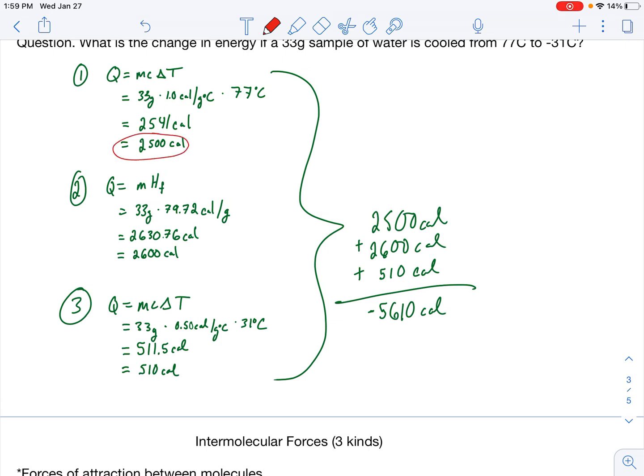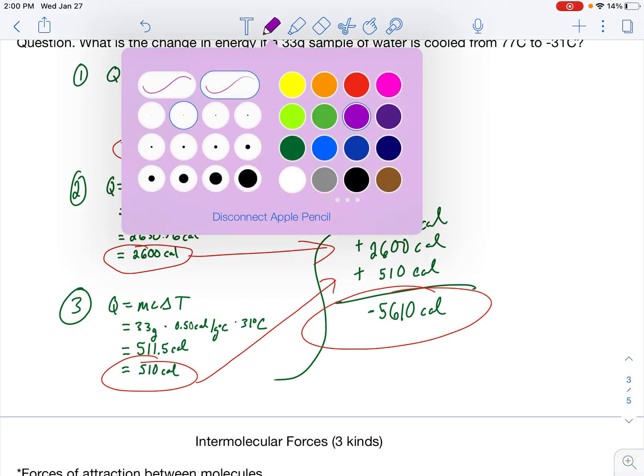Notice how I am rounding here to two sig figs, here to two sig figs, and here to two sig figs. And then I'm adding those values up and using a different rule for sig figs at the end of the day. I have -5,610 calories. That's because this is exothermic. Energy is released. I started at a liquid and I went to a solid. To do that, I have to slow down my individual particles. To slow them down, I have to remove energy. Exothermic, negative amount of energy. That's how it works. You're releasing it into the system. We show a release of energy as a negative value.